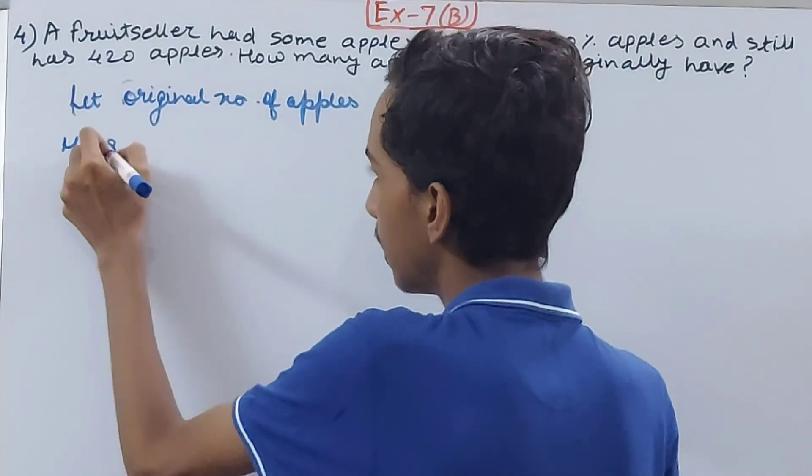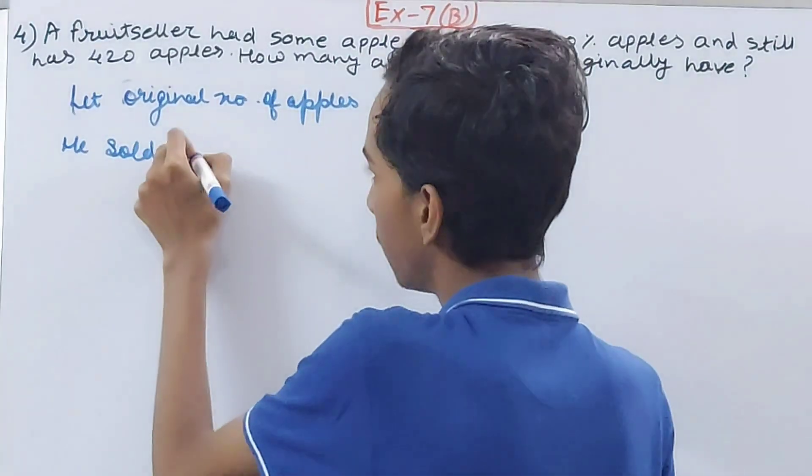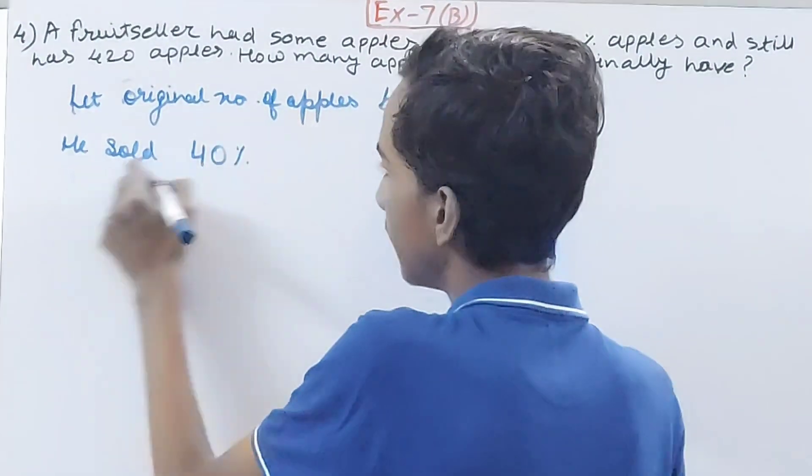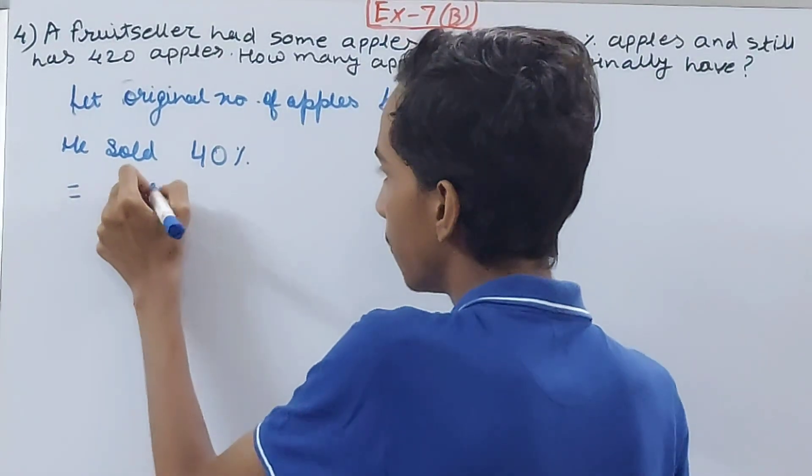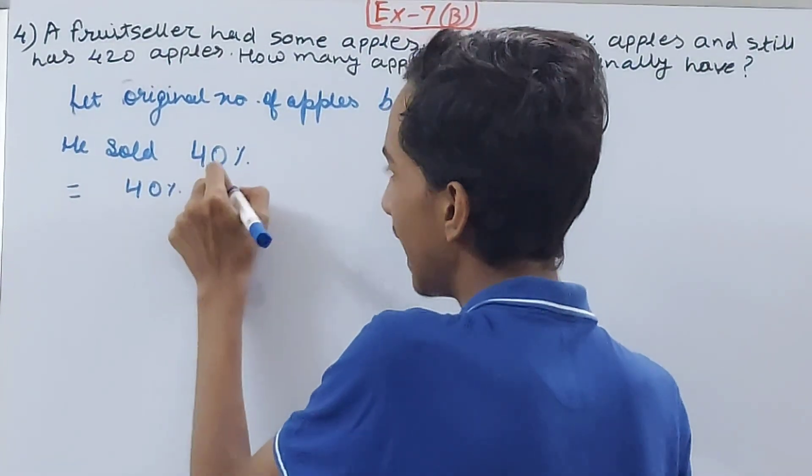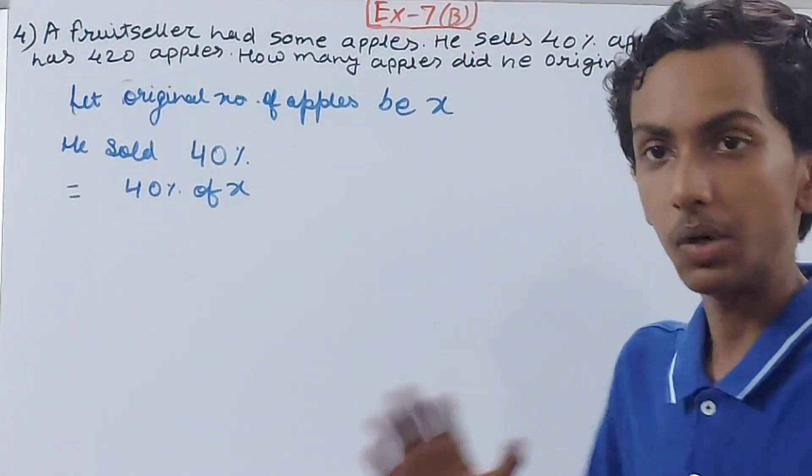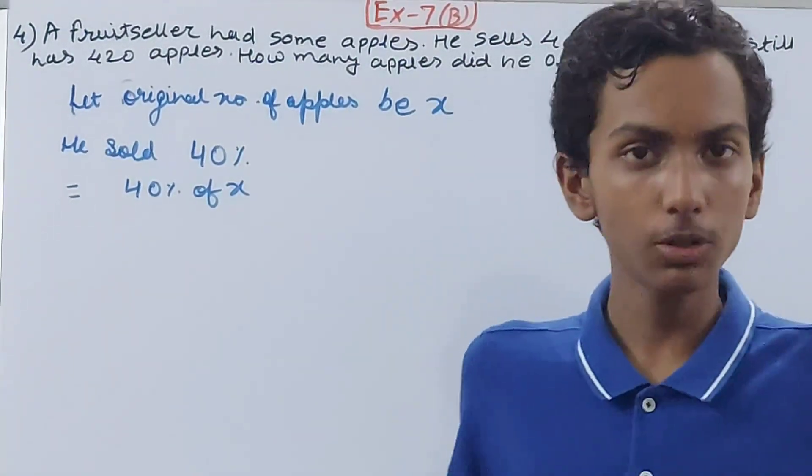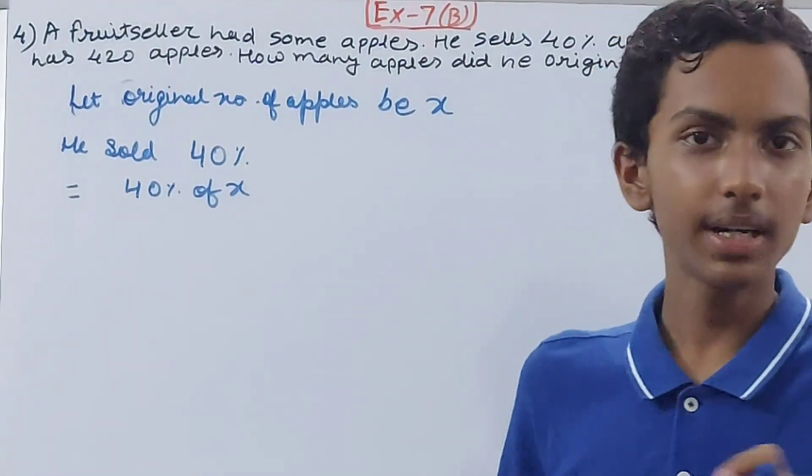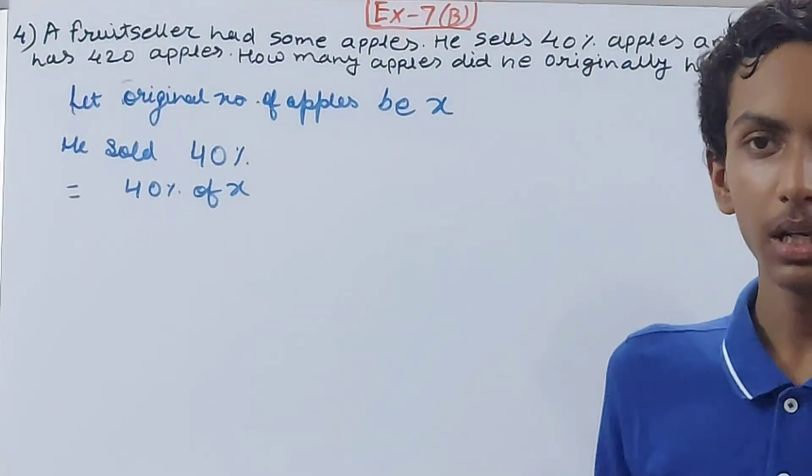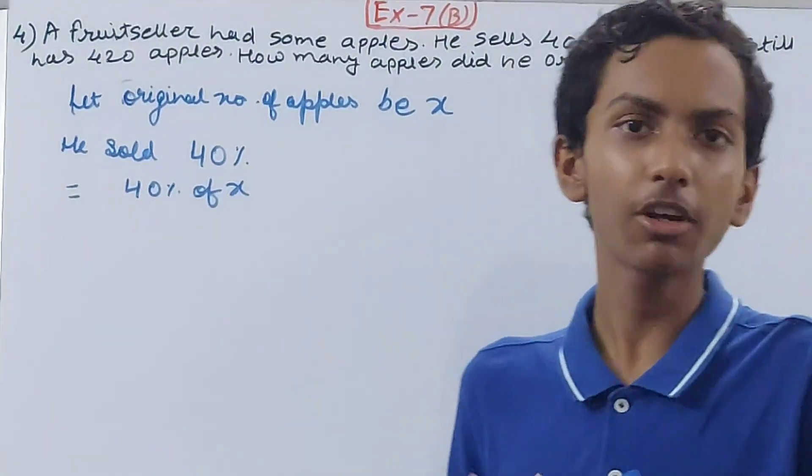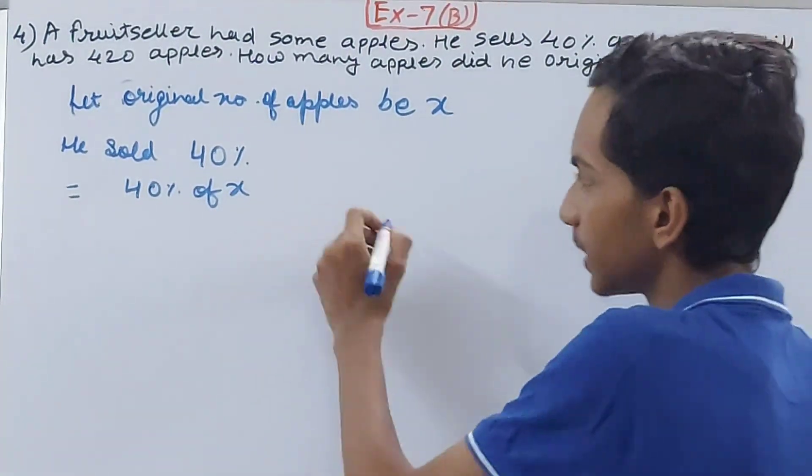Now he sold how many? 40 percent, right? This we can write down as 40 percent of x. That means whatever he had in the starting, of that only he sold 40 percent. From nowhere else he took or gave away any apples.